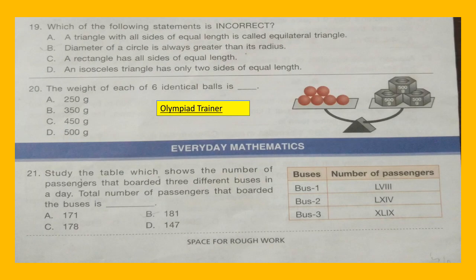Question 19: Which of the following statements is incorrect? A: A triangle with all sides of equal length is called an equilateral triangle. B: The diameter of a circle is always greater than its radius. C: A rectangle has all sides of equal length. D: An isosceles triangle has only two sides of equal length.